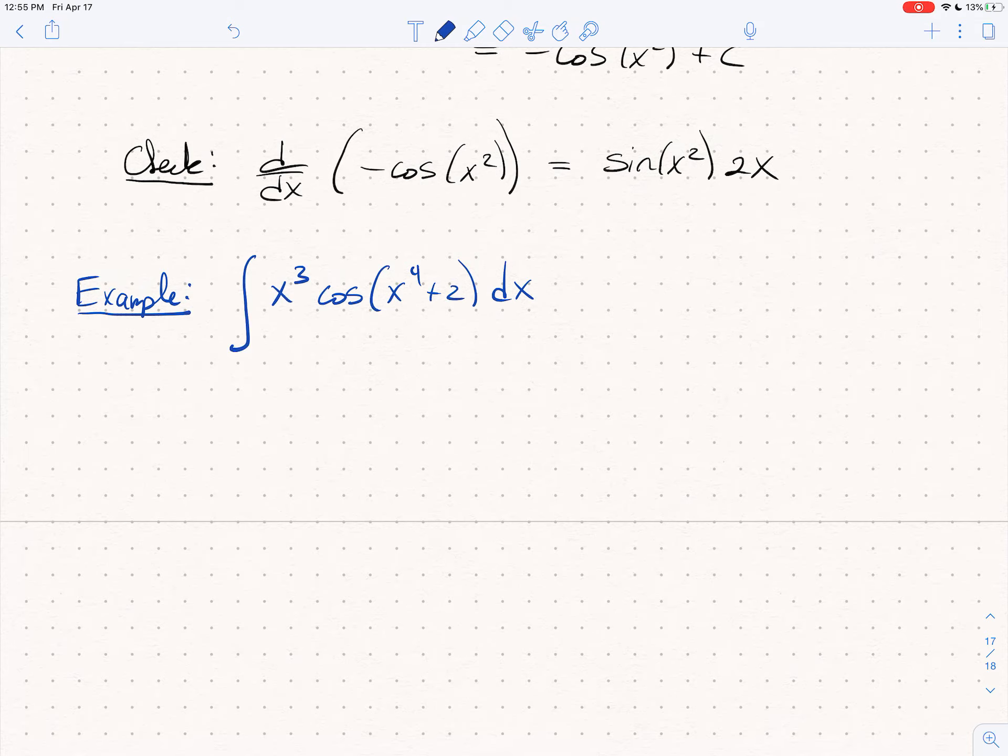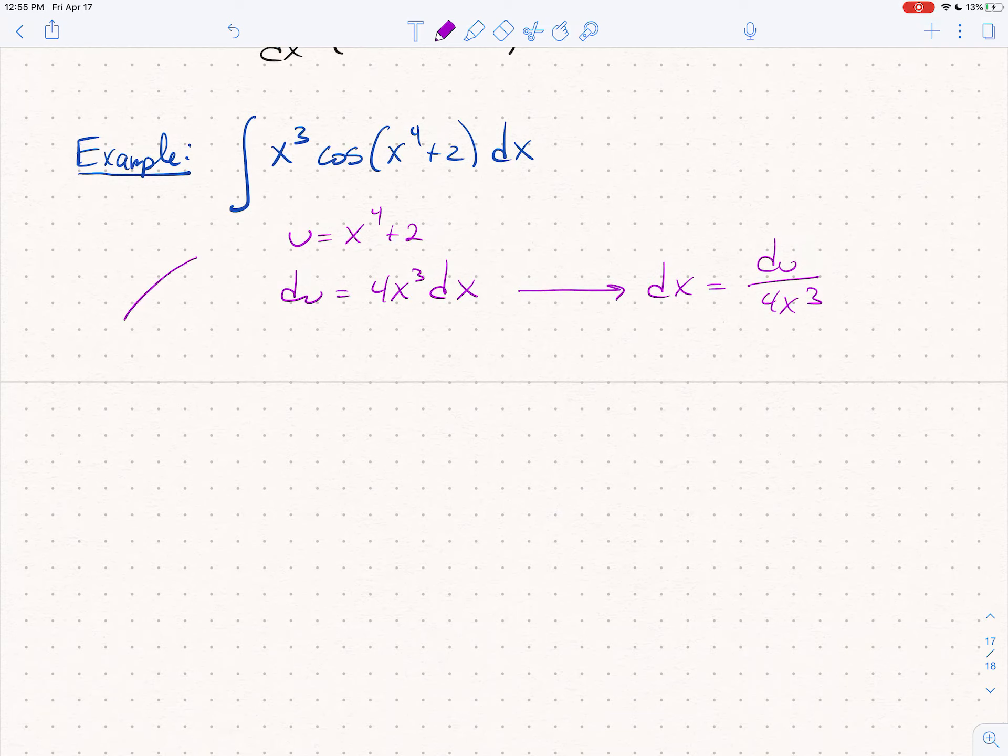I'm going to show you a technique that I actually don't like, but a lot of students do. In an effort to make this easier for you guys, I'm looking at this problem and I can see, hey, there's my inside function. That's a good candidate for u. So, I'm going to set u equal to x to the fourth plus 2. I'm going to compute du is 4x cubed dx. I don't like doing this, but a lot of students like to solve for dx. And you can write dx as du over 4x cubed. And now you just make the substitution. You say, okay, so this is equal to the integral of x cubed cosine of u. And then dx is du over 4x cubed.